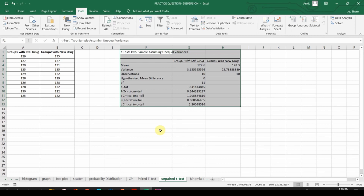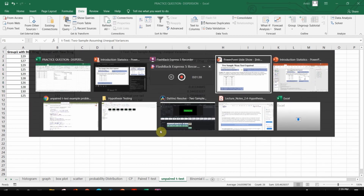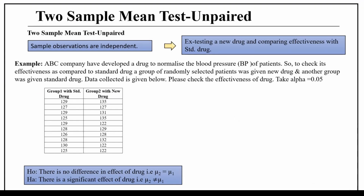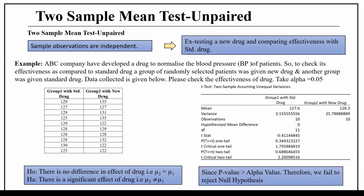Let's now analyze the output. Since it is a two-tailed test, we look at the p-value for two tails. The p-value for two tails is 0.688. This value of p is greater than the alpha value of 0.05, therefore we fail to reject the null hypothesis. As a result, there is no significant difference in the effect of the drugs.